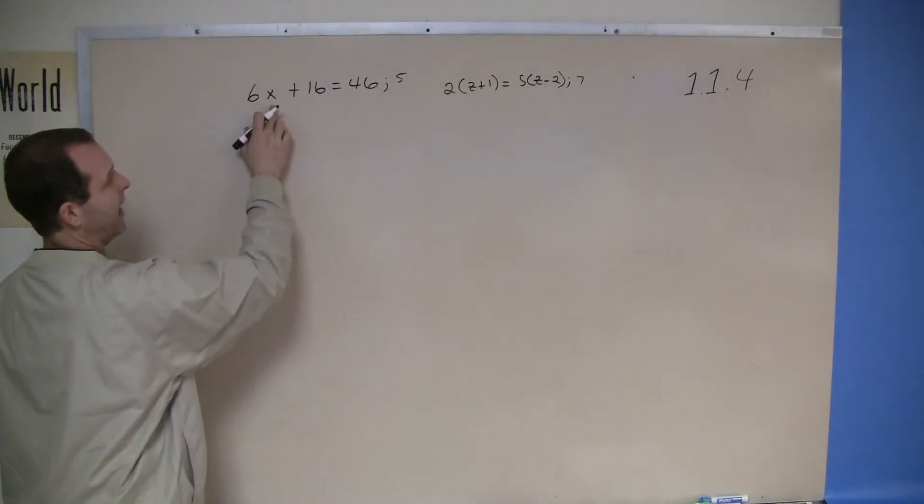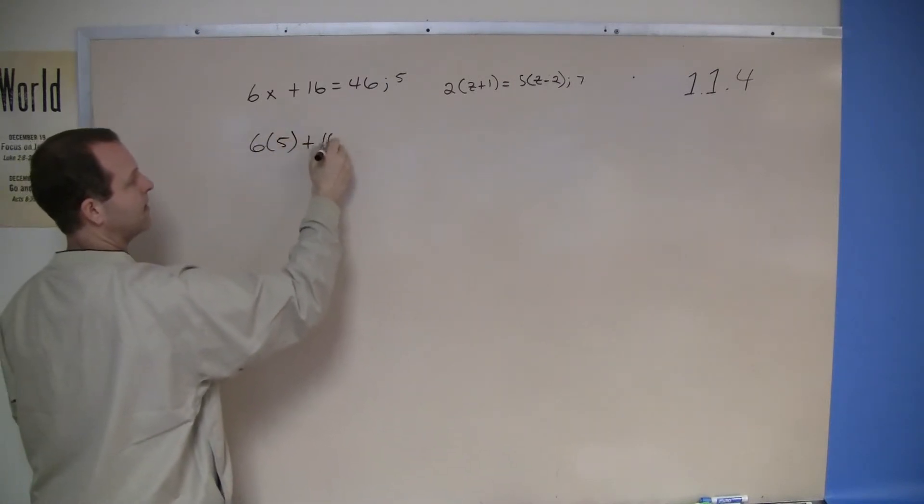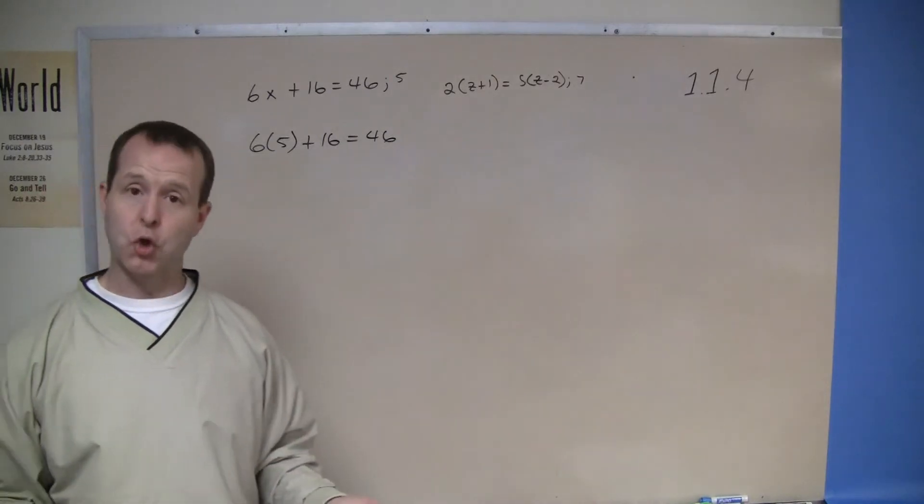So 6 times x but I want to put it at 5. So 6 times 5 plus 16 equals 46. Is that a true equation?